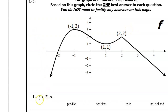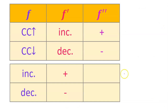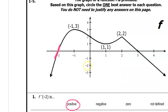Problem number one: f prime at negative two is positive, negative, zero, or undefined? Here is the x value of negative two. f prime means the slope at negative two. You can see that the slope at negative two is positive. Another way to look at it is that if function f is increasing, then f prime will be positive. And you can see that at negative two, function f is increasing, therefore f prime is positive.